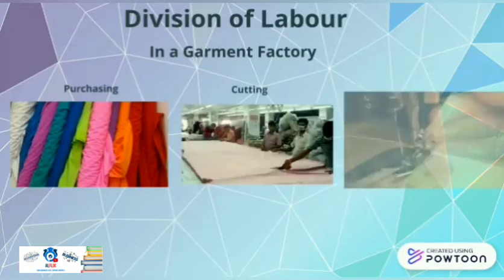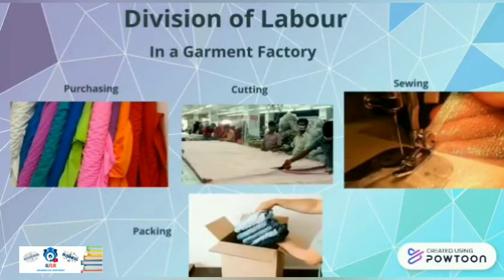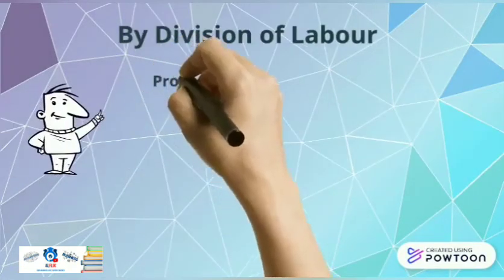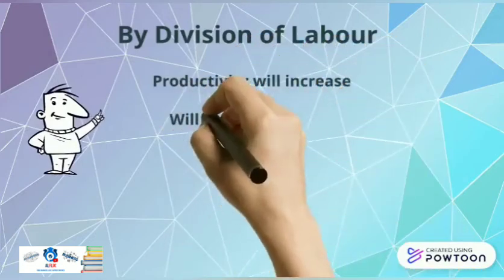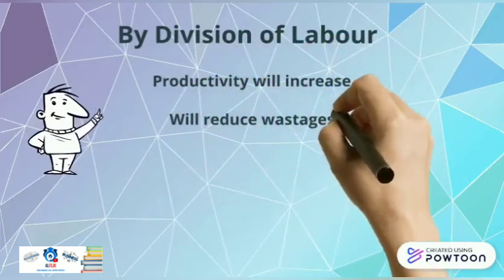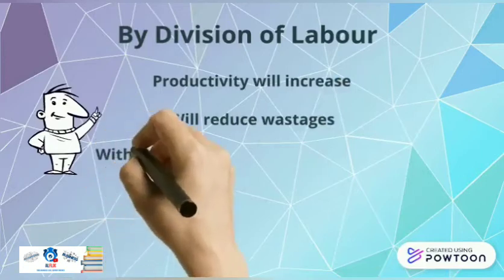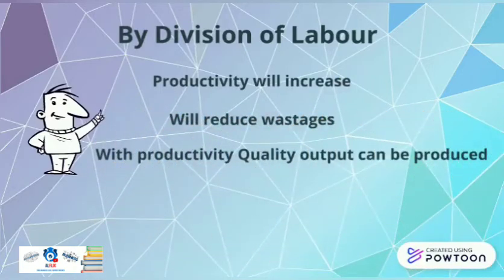For example, in a garment factory the purchasing of material is done separately, then cutting, designing, sewing, and even packing are all done by separate employees. By doing so, productivity will increase, and that increase in productivity will reduce wastages in the production process. It will also ensure that quality output is delivered.